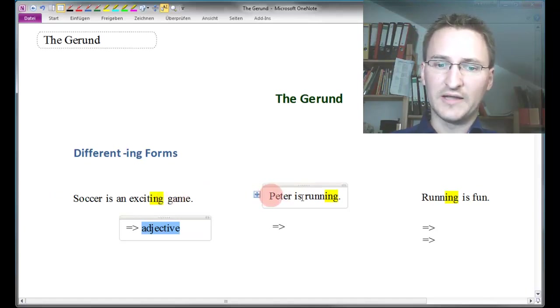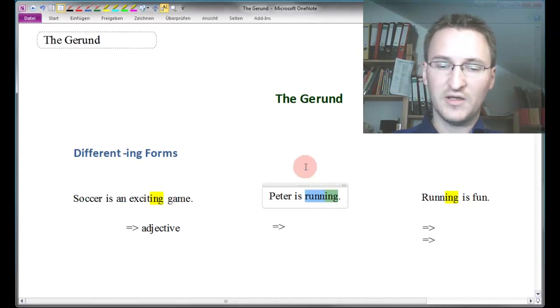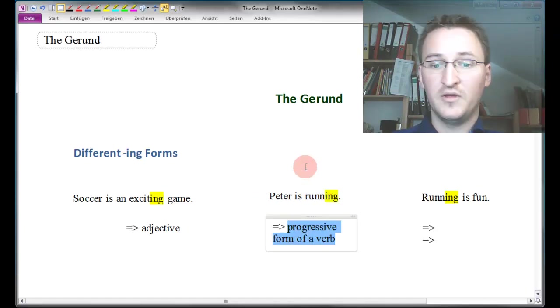If we take a look at 'Peter is running,' for example, we will certainly find out that here we've got a combination of an auxiliary verb and a full verb. Peter is running here simply is a verb form, and it is the progressive form of a verb.